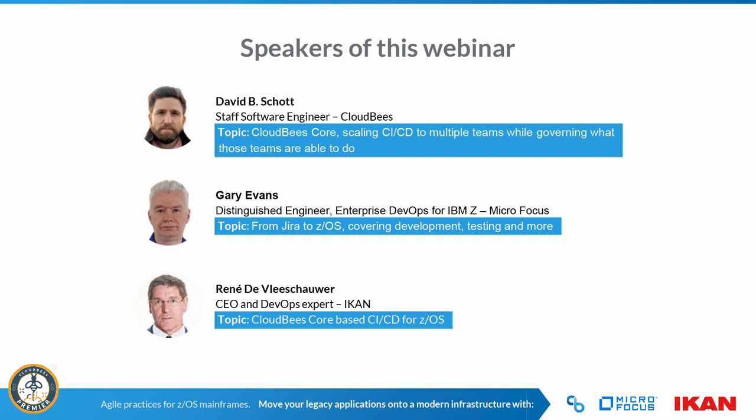So to start here, we have our three speakers. First, we have David from CloudBees. David is one of the driving forces behind the CloudBees Core on AWS QuickStart, which provisions the CloudBees Core environment on AWS. Then we have Gary. He is not only a distinguished Micro Focus Enterprise DevOps engineer for IBM Z, but also one of the architects of the Micro Focus mainframe apps on AWS implementation.